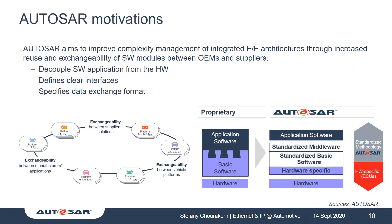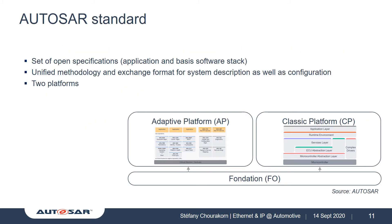Since its creation in 2002, AUTOSAR's aspiration is to reduce complexity in EE architecture and increase software module reuse by decoupling the application software from the hardware, which defines clear interfaces and specifies data exchange formats between suppliers and OEMs. This participates in reducing development times and costs. As of today, AUTOSAR offers a set of specifications published every year, and defines methodology and exchange formats for configurations as well as system descriptions.